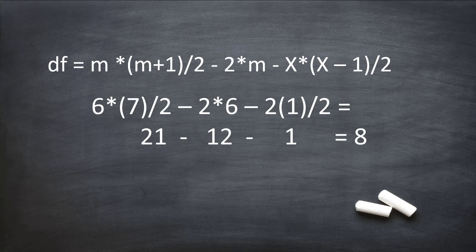Let's put it into our formula. The first half: m times (m+1) divided by 2. We had six observables, so that gives us a max degrees of freedom of 21. Then 2 times m, so 2 times 6—that's our number of parameters to be estimated. Then the back end is those free off-diagonal aspects of the covariance matrix: X times (X-1) divided by 2, which gives us 1. So 21 minus 12 minus 1 gives us 8 degrees of freedom for our measurement model.